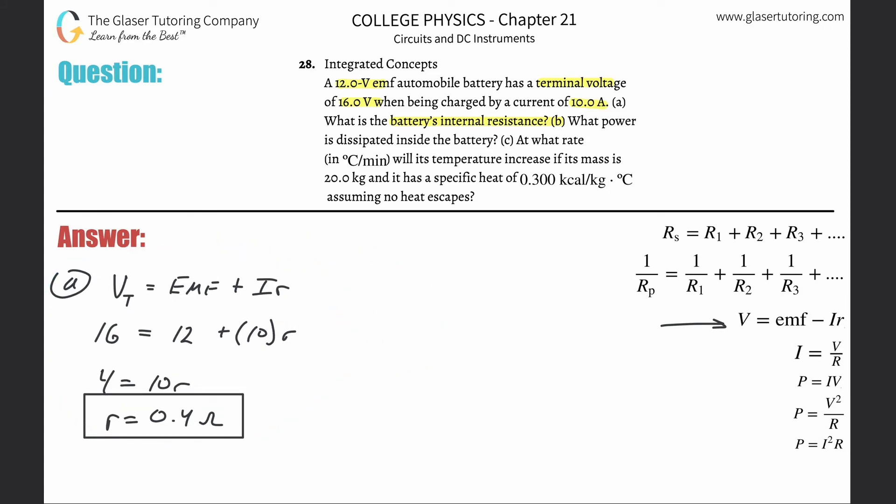Letter B: what power is dissipated inside the battery? To figure out the power inside the battery, we use the current inside the battery squared, multiplied by the resistance inside the battery. Take 10 squared times 0.4, which is 100 times 0.4, giving us 40 watts.